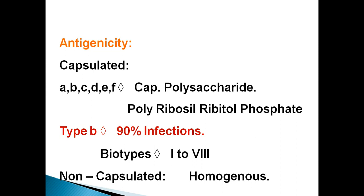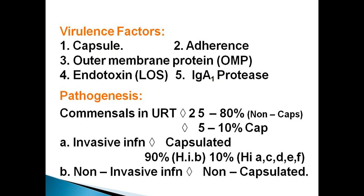Type b causes 90% of infections in human beings. Non-capsulated strains are a, c, d, and e. Virulence factors responsible for pathogenicity include: the capsule, adherence, outer membrane proteins (OMP), endotoxin, and IgA protease.